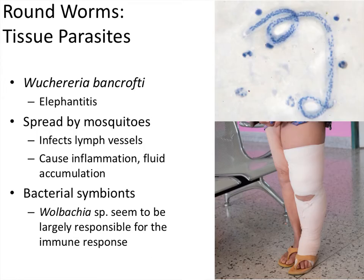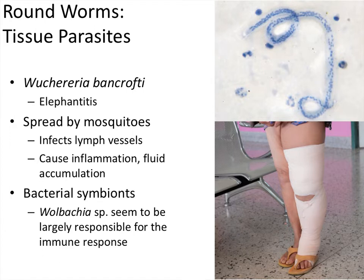Our next one is also a roundworm, but we're moving into the tissue parasite category. This one is called Wuchereria bancrofti — a bit of a mouthful — and most people just refer to it as elephantiasis. That's not entirely accurate, as elephantiasis is the condition it causes rather than the name of the worm itself. But if you call it elephantiasis, everyone will know what you mean.